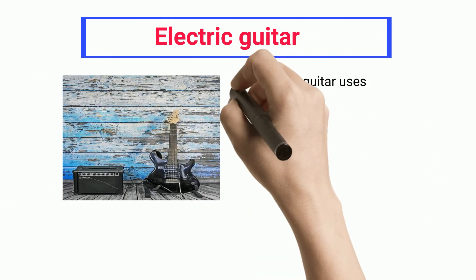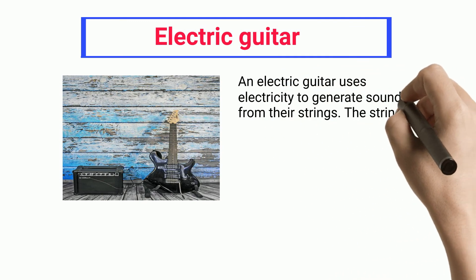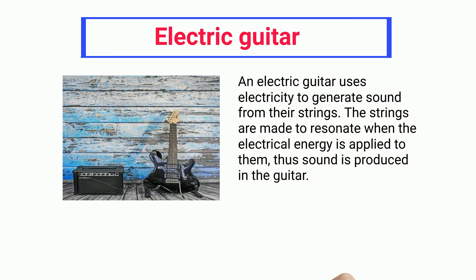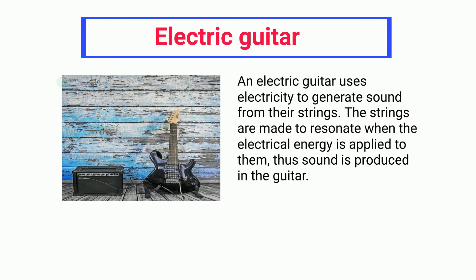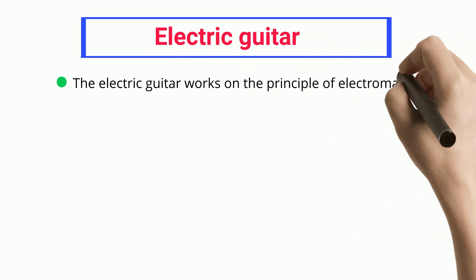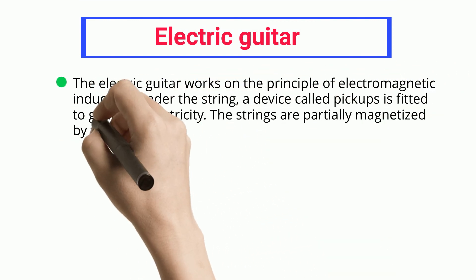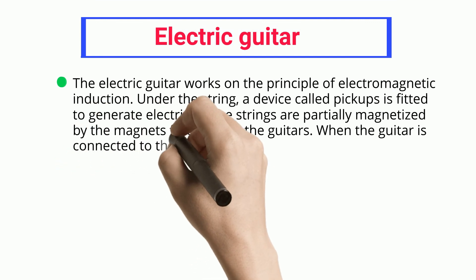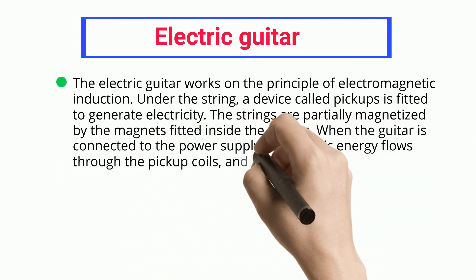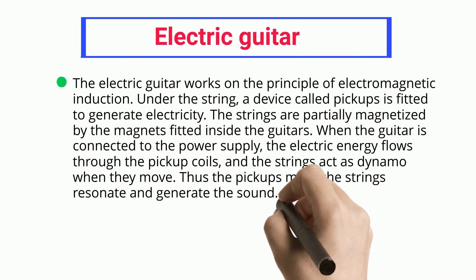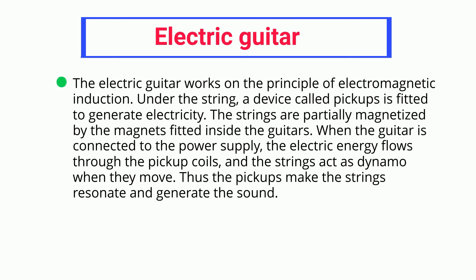An electric guitar uses electricity to generate sound from its strings. The strings resonate when electrical energy is applied, producing sound. The electric guitar works on the principle of electromagnetic induction. Under the strings, devices called pickups are fitted to generate electricity, and the strings are partially magnetized. When connected to a power supply, electric energy flows through the pickup coils, and the strings act as a dynamo when they move, making them resonate and generate sound.